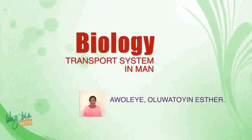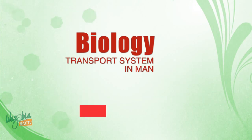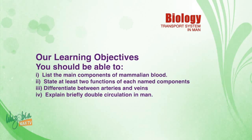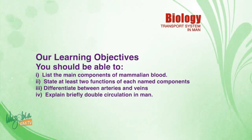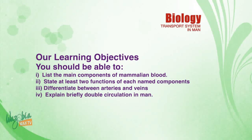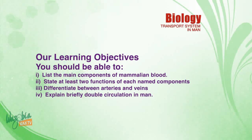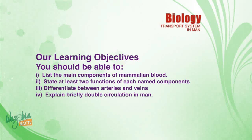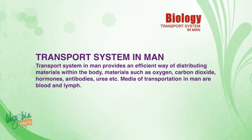The topic I'll be discussing with you today is transport system in man. At the end of this lesson, students will be able to: one, name the main constituents of mammalian blood; two, state at least two functions of each named constituent; three, differentiate between arteries and veins; four, explain briefly double circulation in man.